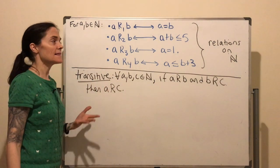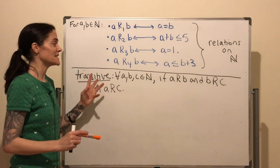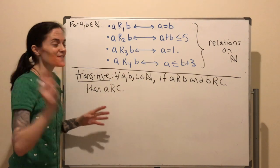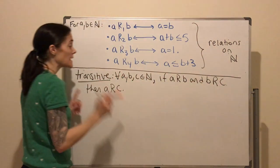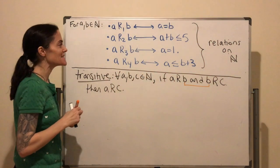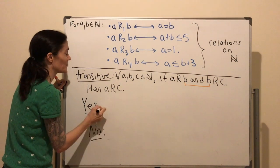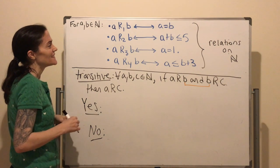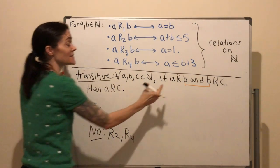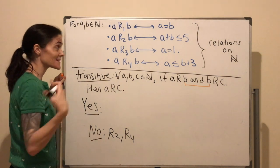Now for transitive — students often struggle with transitive the most. We need: for all a, b, c in ℕ, if a relates to b and b relates to c, then we must have a relates to c. The middle ones match. I will say no to R2 and R4. To justify no, I need one example where a relates to b and b relates to c, but a does not relate to c.